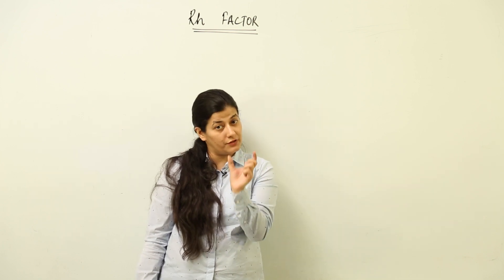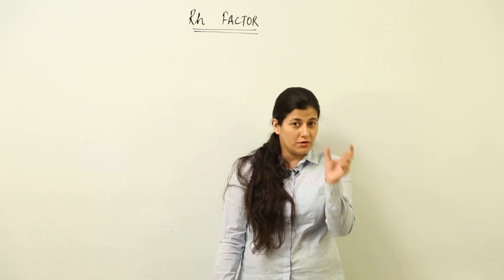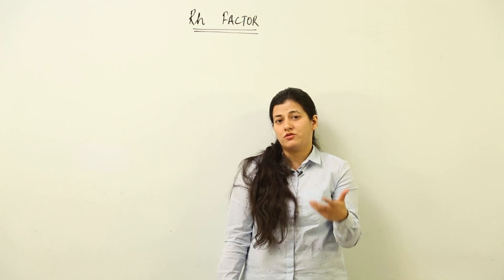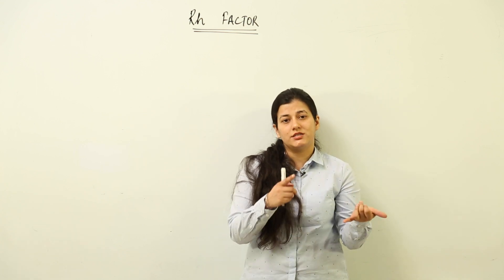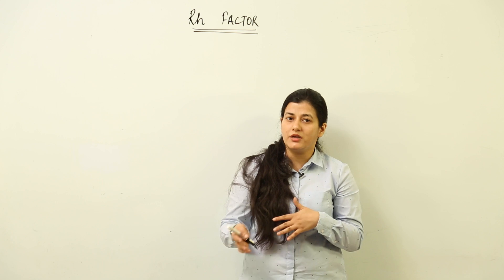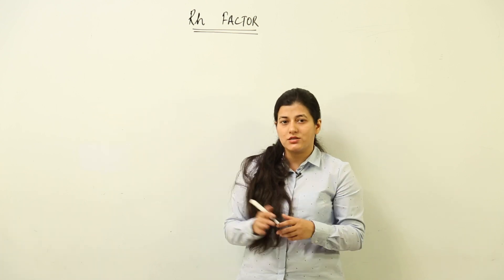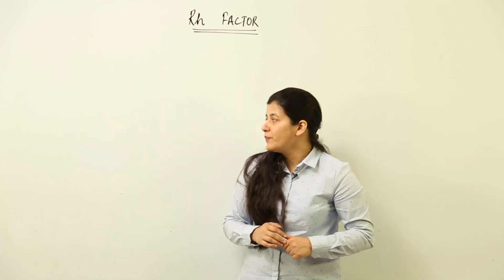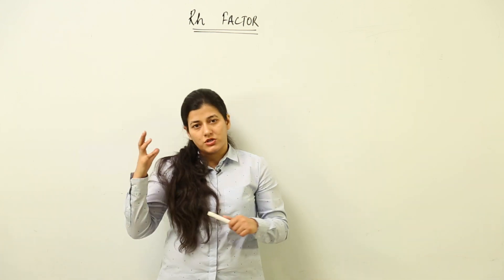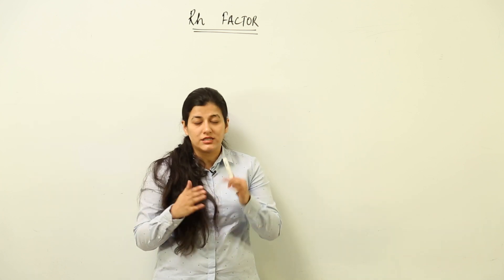The Rh factor is what adds that suffix — whether it is positive or negative. If I am asked what is my blood group, I would say either A positive or A negative, B positive or B negative, and so on. You know this very well. Now, you must not say any other group if you are asked.